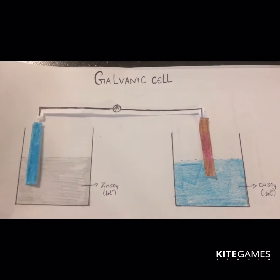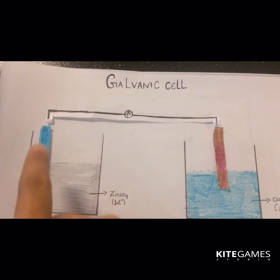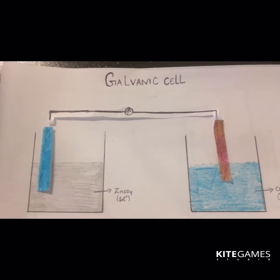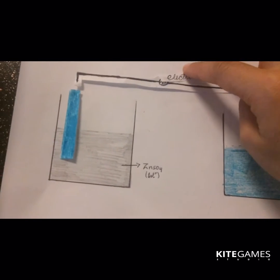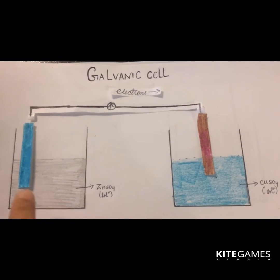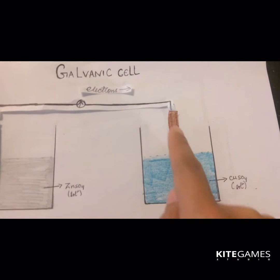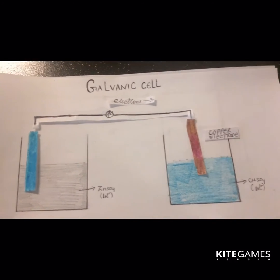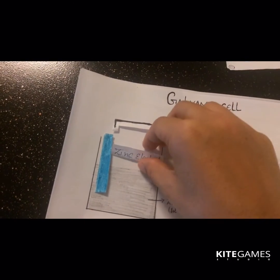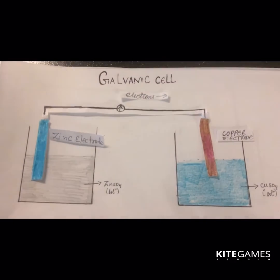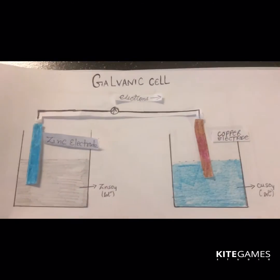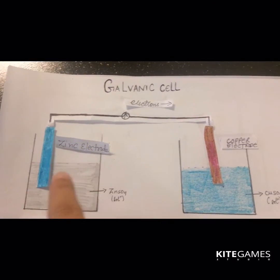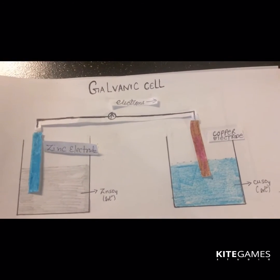Both electrodes are connected through a copper wire. When both electrodes are connected through the wire, a chemical reaction takes place. In that chemical reaction, electrons start flowing from the left beaker — which contains the zinc electrode — to the right one, which contains the copper electrode in the copper sulfate solution.